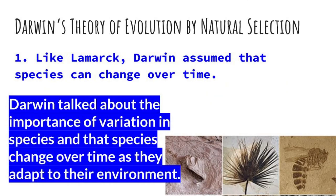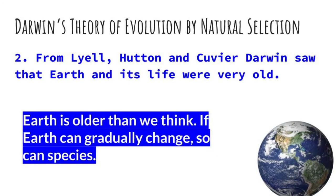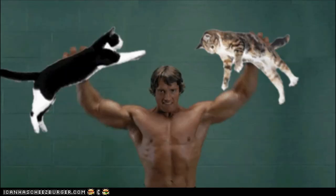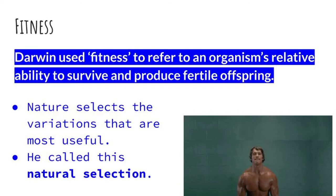Like Lamarck, Darwin assumed that species change over time, and he talked about the variation in species and how important that was, because one variation might be better suited to survive in its environment than others. From Lyell, Hutton, and Cuvier, Darwin saw that the earth was very old — that it can gradually change, and therefore so can species. From Malthus, Darwin knew that populations could grow faster than their resources, and that overpopulation led to struggle. Darwin proposed that organisms produce more offspring than can survive, so that all populations would be limited by their environment, and only the fit would survive. Darwin used 'fitness' to refer to an organism's relative ability to survive and produce fertile offspring.